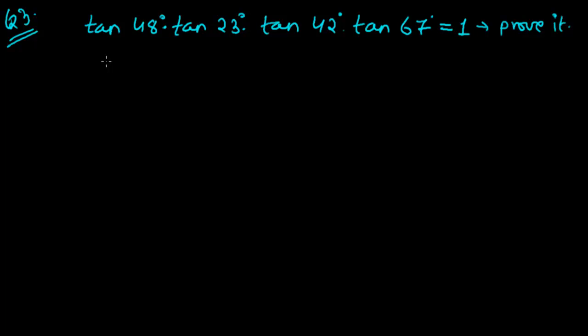Hi friends, this is the third type of question on trigonometric ratios of complementary angles. The question asks us to prove that tan 48° times tan 23° times tan 42° times tan 67° equals 1.